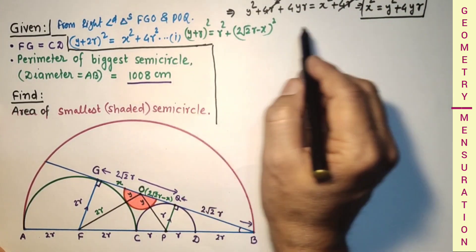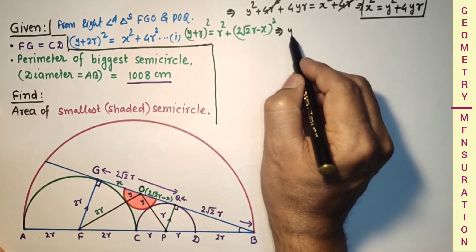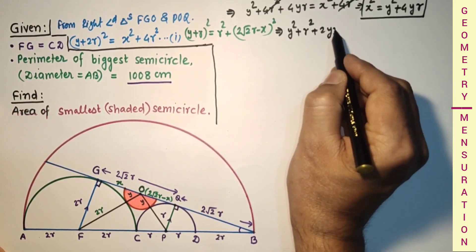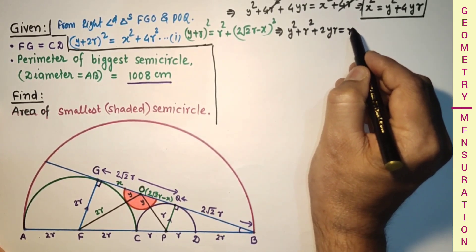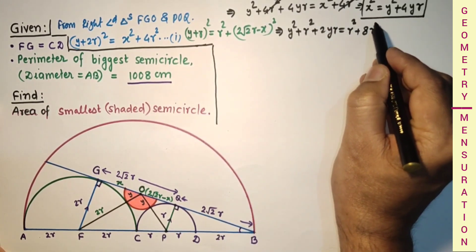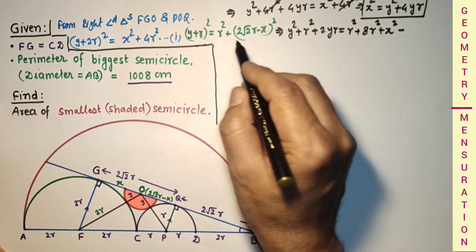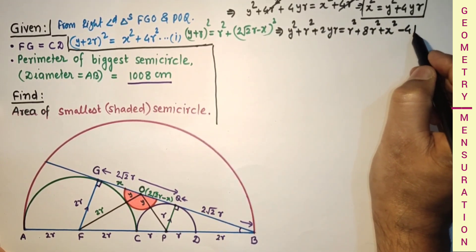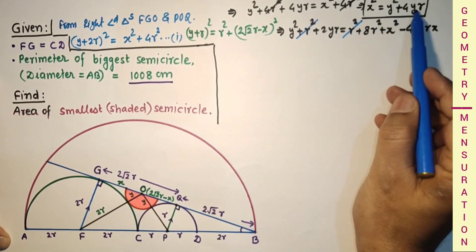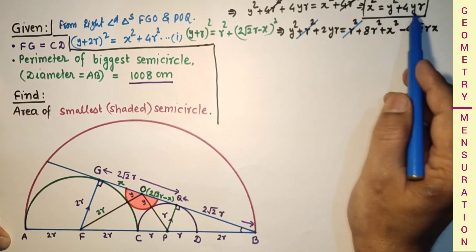Simplifying the second equation: y² + r² + 2yr = r² + 8r² + x² − 4√2·r·x. The r² terms cancel. Substituting x² = y² + 4yr into this equation, we get: y² + 2yr = 8r² + y² + 4yr − 4√2·r·x. The y² terms cancel, giving: 2yr = 4√2·r·x − 8r².